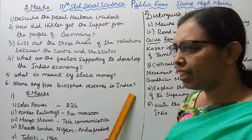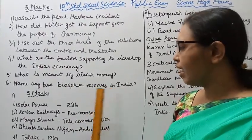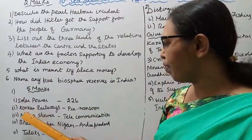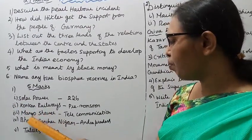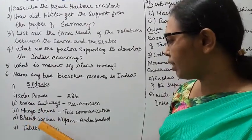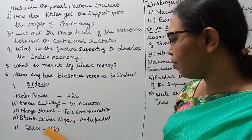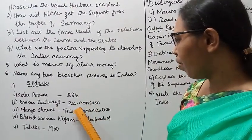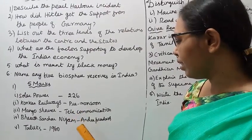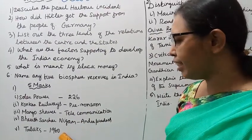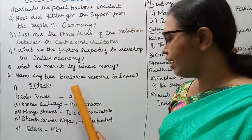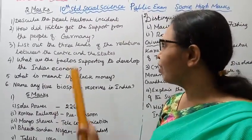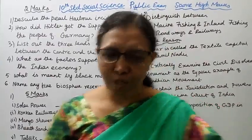Sixth, name any five biosphere reserves in India. Five marks matching exercise: Solar power, Konkan Railways, Mango shower, Bharat Sanchar Nigam, pre-monsoon, telecommunication, Andhra Pradesh, 1960 — practice this matching question carefully.